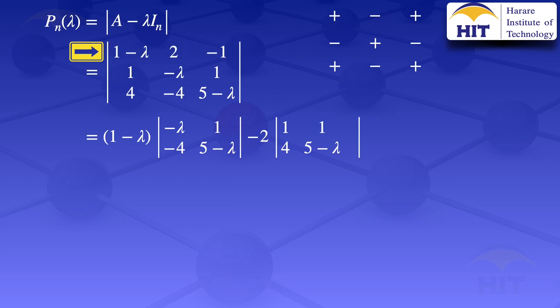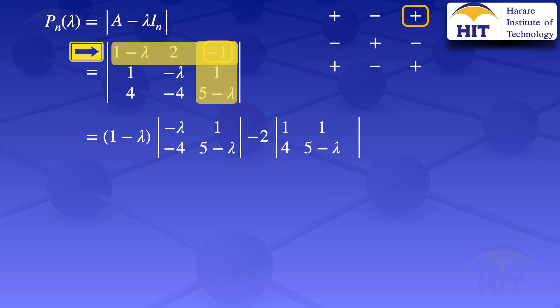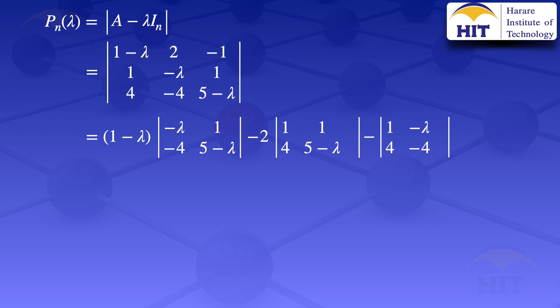We now move on to the third element in that row, which is minus 1, and its sign in the array is positive. We close out the row and column containing that element, then multiply by the determinant of the uncovered elements. We get minus 1 multiplied by the determinant of 1 minus lambda, 4, minus 4. So what we now have to do is evaluate the determinants of the 2 by 2 matrices we've just obtained.